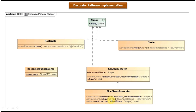So basically, this BlueShapeDecorator is used to decorate the rectangle or circle with blue color. The DecoratorPatternDemo class has the main method and is used to demonstrate this decorator design pattern. I will now open Eclipse and show you the code.